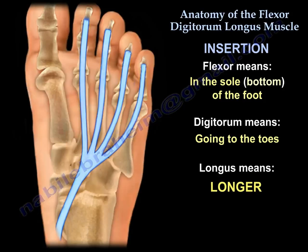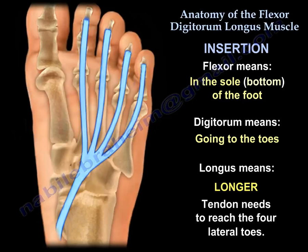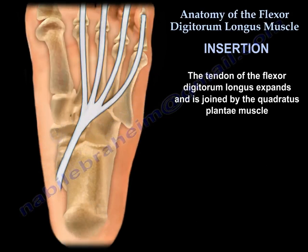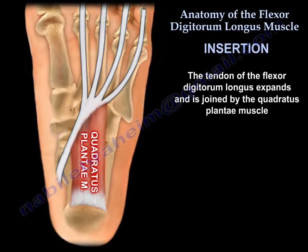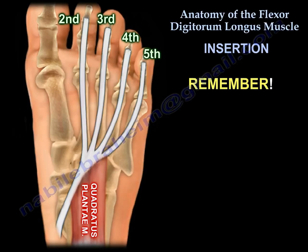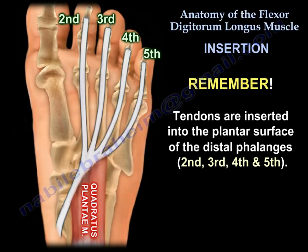'Longus' means it's longer — it will reach the distal phalanx. If you have 'longus' then you have another muscle called 'brevis.' This tendon needs to reach four toes — the four lateral toes. So this tendon expands and is joined by the quadratus plantae muscle, as you see in this diagram, and finally it divides into four tendons. These tendons are inserted into the base of the distal phalanx of the second, third, fourth, and fifth toes — into the plantar surface of the distal phalanx from two to five.